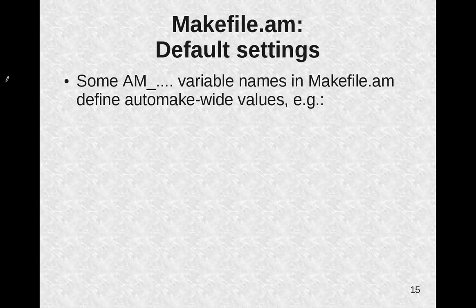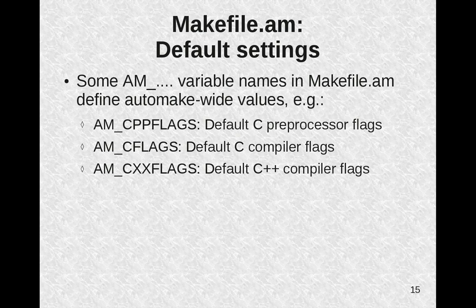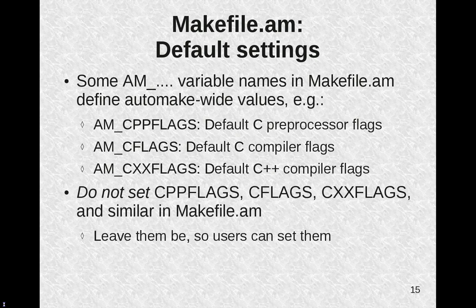Certain variables that you can set in makefile.am define automake-wide values that are defaults. For example, AM_CPPFLAGS defines the default C preprocessor flags. Same for CFLAGS, which defines the default C compiler flags. CXXFLAGS defines the default C++ compiler flags. Do not set CPPFLAGS, CFLAGS, CXXFLAGS, and similar directly — they're intended for setting by users. If you set them in makefile.am directly, it'll interfere with user settings.